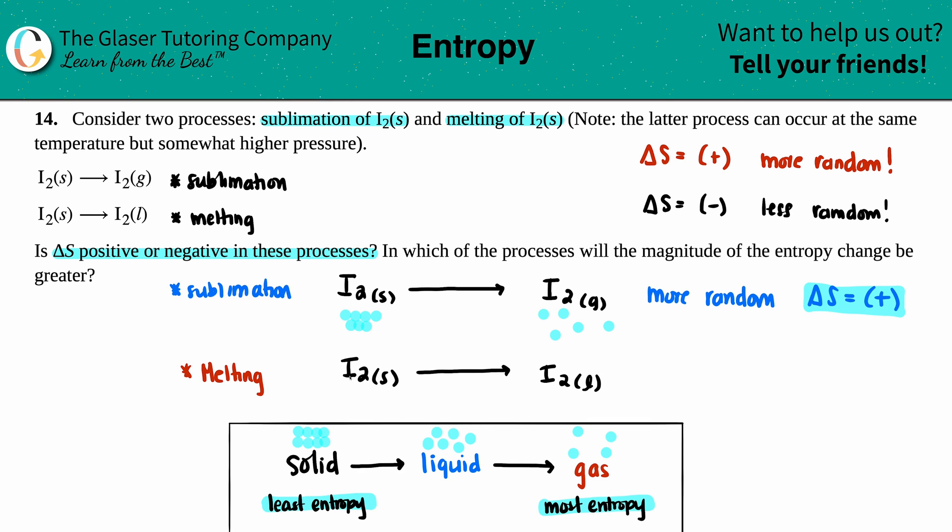So if I just draw out those molecules again, I start off with the solid, which literally would be the same as before—all those molecules are compact together—and I'm going to a liquid. So they're not as all over the place as a gas, but they're definitely more random than a solid.